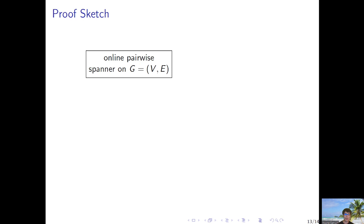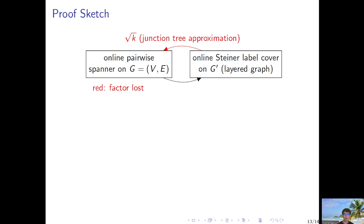In the beginning, we have an online pairwise spanner instance on graph G, which is given offline, and terminal pairs and distances arrive online. Since the graph is known offline, we construct a layered graph G' and define an online distance Steiner label cover problem. The reason for using a layered graph is that the edge lengths are uniform, so the layered graph opens up the path and captures the hard distance constraints. Since a solution of the online label cover problem corresponds to a junction tree, we can map back the junction tree solution to the original graph by losing a square root of K factor.